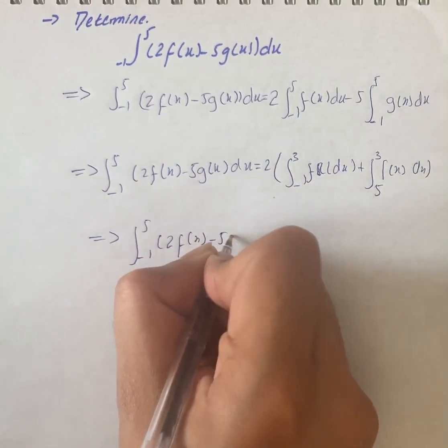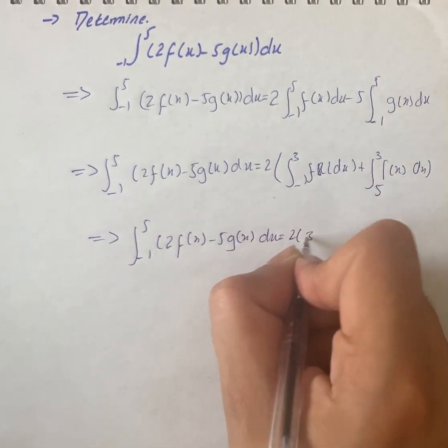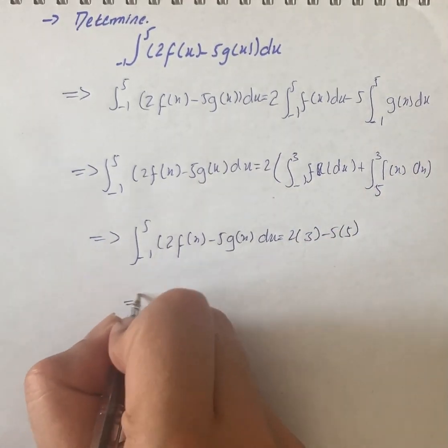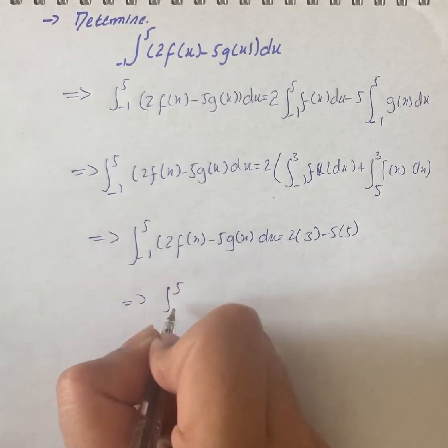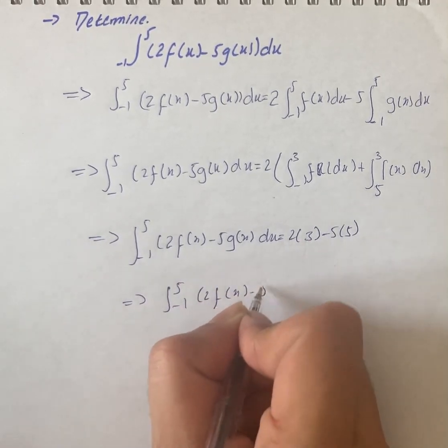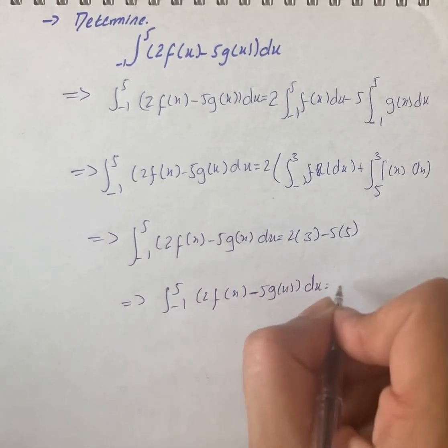That is equal to 2 times (3 minus 5 times 5). So on simplification, it further goes: ∫[1,5](2f(x) - 5g(x))dx is equal to 6 minus 25.